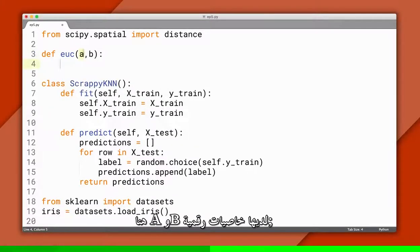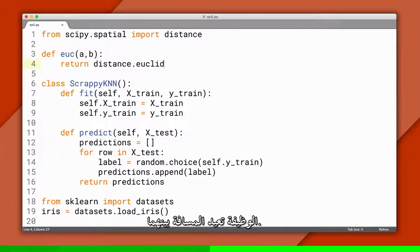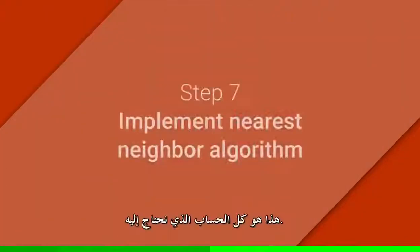Here, a and b are lists of numeric features. Say a is a point from our training data, and b is a point from our testing data. This function returns the distance between them. That's all the math we need.